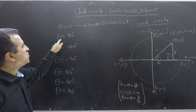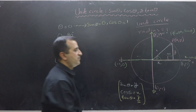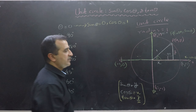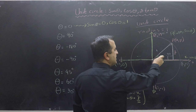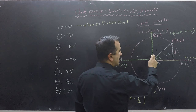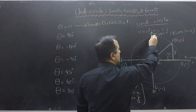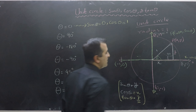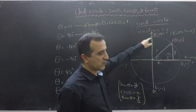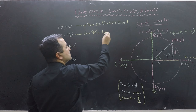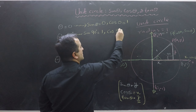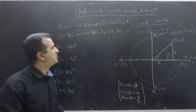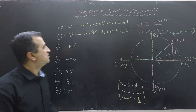Now we find values for theta equals 90 degrees. Because it is positive 90, we travel anti-clockwise and reach the top of the unit circle. At this line, sine 90 equals y, which is 1, and cos 90 equals x, which is 0. So far so good — we are doing easy stuff.